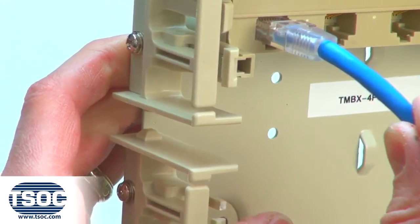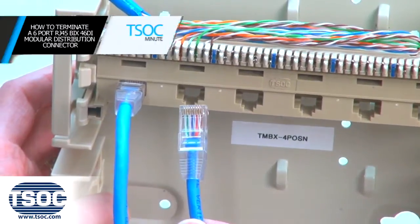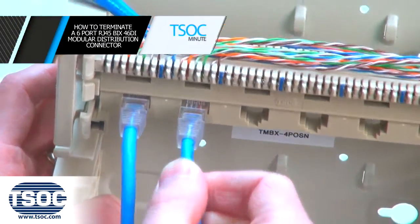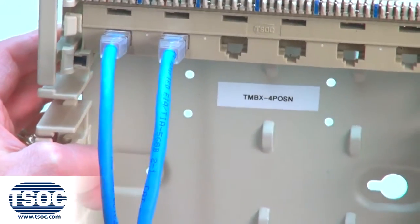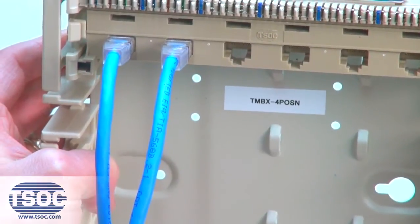Step 6: Place the required designation label directly onto the modular distribution connector and install into the distribution frame. Install the appropriate patch cables as required.